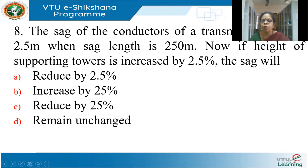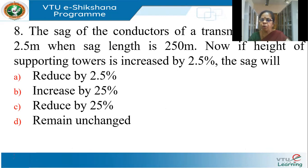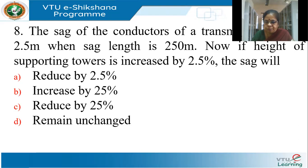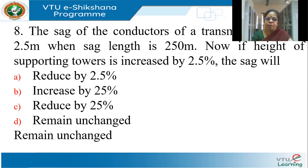The sag of the conductors of a transmission line is 2.5 meters when the span length is 250 meters. If the height of the supporting towers is increased by 2.5%, what happens to the sag? Nothing will happen. The sag formula is S = WL² / 8T — it depends on the weight of the conductor, the span length, and the tension. It does not depend on the height of the tower. So the correct answer is: sag remains unchanged.